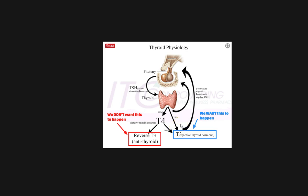I want to draw your attention to how conventional doctors tend to replace thyroid hormone. We know that 80% of what the body produces is T4 and 20% is T3. But when doctors treat patients whose thyroid has been removed, destroyed by radioactive iodine, or damaged by something like Hashimoto's, they only supply T4. This approach fails to recognize the fact that your body is naturally producing T3 as well. We'll get to this concept a little bit later.